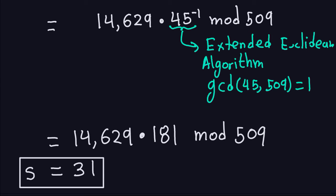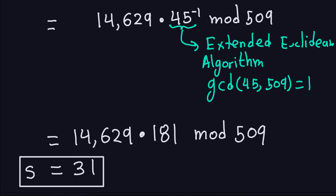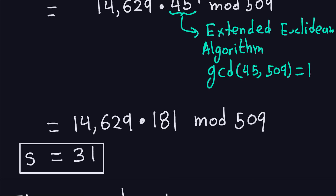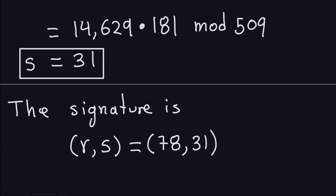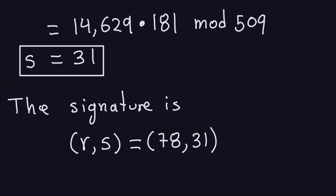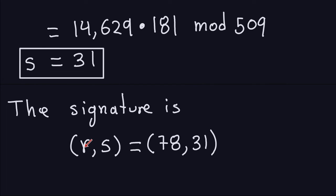Finally, multiply 14,629 by 181, take the remainder modulo 509, and we get S equals 31. So the signature is the pair of numbers R and S: R is 78 and S is 31.